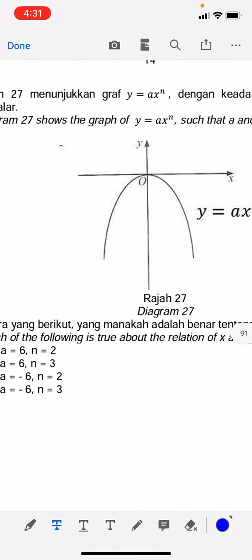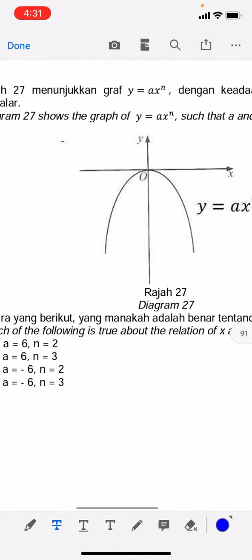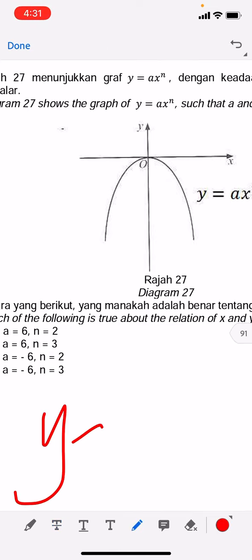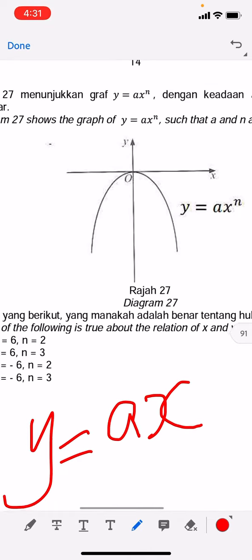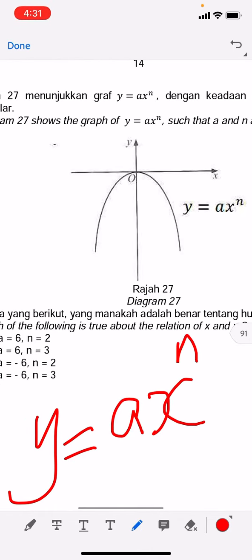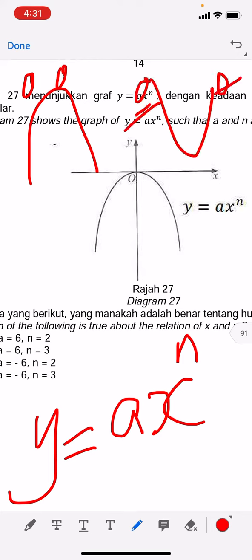Well, this is easy. Y equals ax to the power of n, where a is a number, x is the unknown or variable, and n is the power. When we see the graph, we see there are two intersections here, so the power should be two.